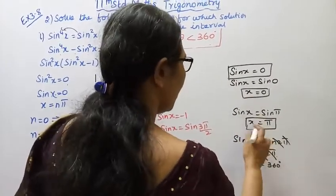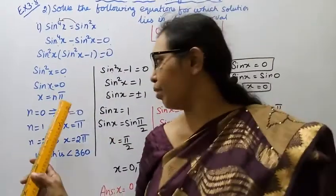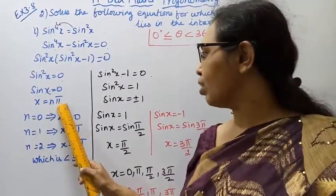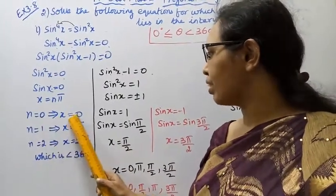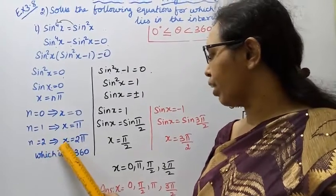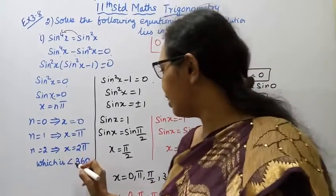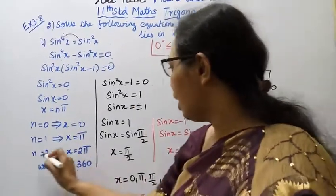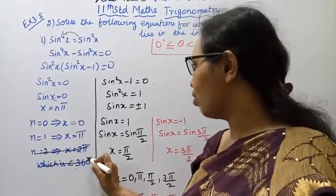x = 0, x = π. The general form is x = nπ where n = 0, 1, 2.